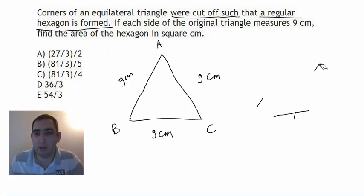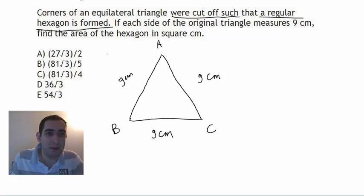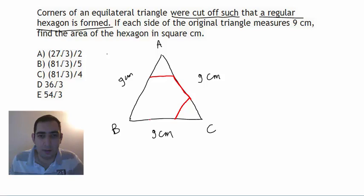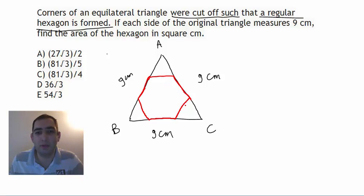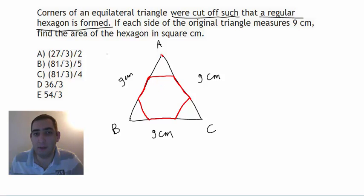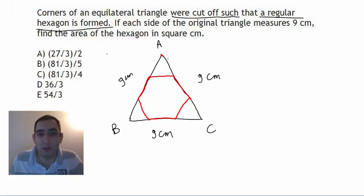What we're going to do is cut off the corners of our triangle like this to produce a regular hexagon, where each side has the same length as the others.